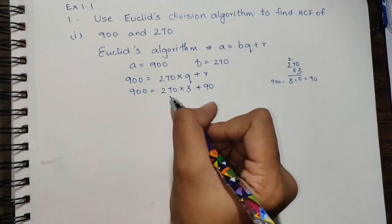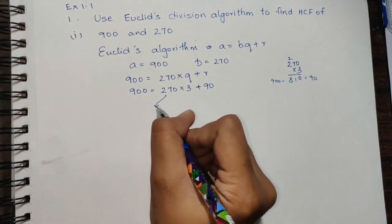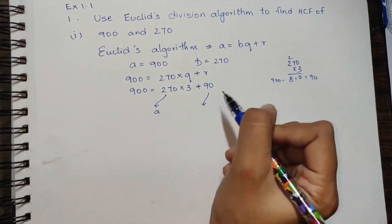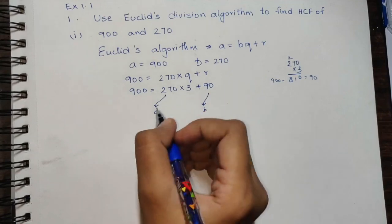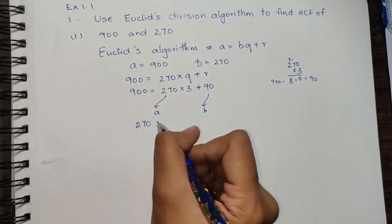Now in this step, we will take 270 as a and 90 as b. Again, we apply Euclid's division algorithm.